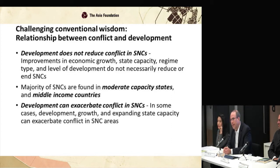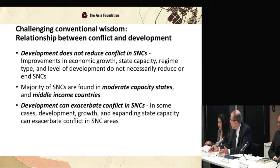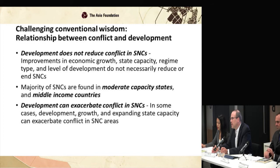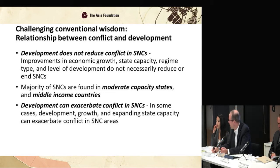The challenge for development actors is that the traditional mandate of development assistance — reducing poverty, improving education, etc. — does not seem to have any effect on these conflicts. These are mostly middle-income countries, moderate capacity states where the economy has been transforming over the last two generations, yet these conflicts have continued. Our key finding is that core development outcomes — economic growth, state capacity, democratization, sectoral development — do not necessarily end these conflicts. In fact, if done poorly or without recognition of the conflict dynamics, they can actually make them worse.